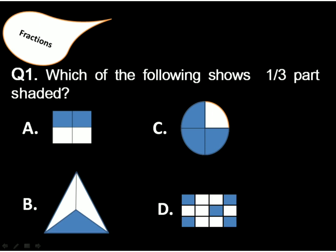Question 1: Which of the following shows 1 by 3 parts shaded? The correct answer is option B, because there are 3 parts and 1 part is shaded.